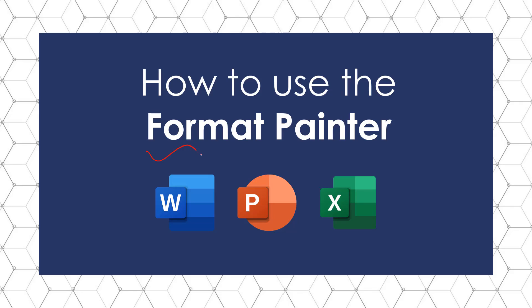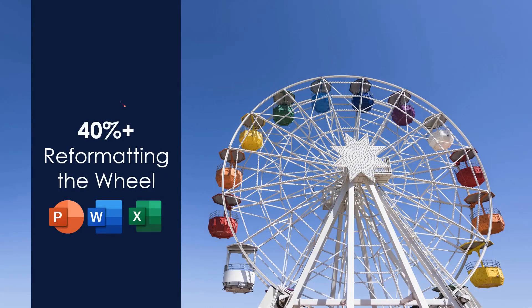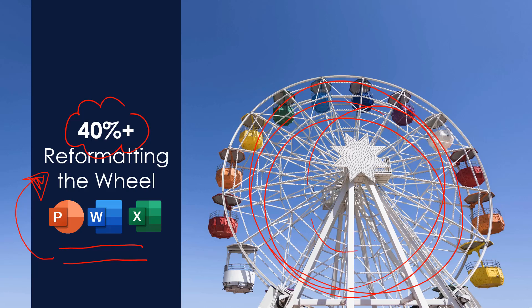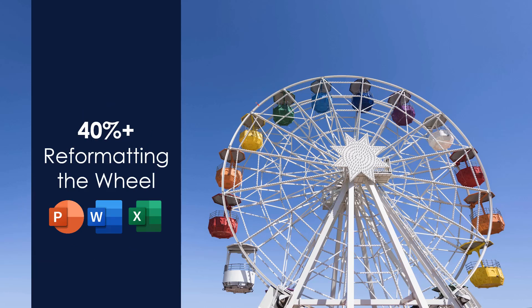This is Taylor from Nuts of Bolt Speed Training with how to use the Format Painter in Word, PowerPoint, and Excel. The reason this is important is 40% or more of your time inside the Microsoft Office Suite, if you're not careful, can be spent manually reformatting the wheel. What the Format Painter allows us to do is find an object with the formatting we want — we do not need to know how it's formatted — copy that formatting and paste it somewhere else.